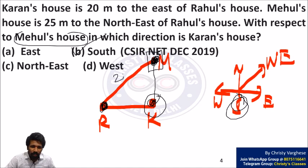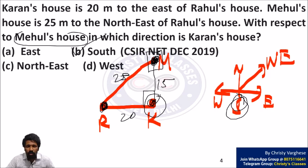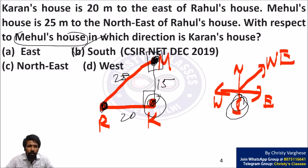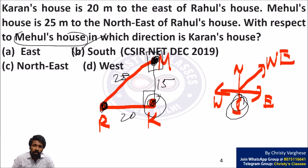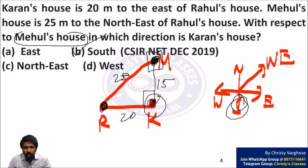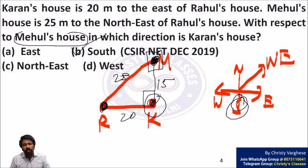Moreover, this is 25 and this is 20, so you can find the third side as 15 using Pythagoras theorem, since south is perpendicular to east. If the question had asked where Mahul's house is from Current's house, the answer would be north; if asking where Rahul's house is from Mahul's house, the answer would be southwest. The answer changes according to which point you take as origin. Here, option B — south — is the answer.